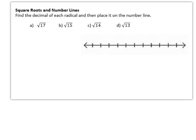Square roots and number lines. So you need the calculator for this one. The square root of 17 is approximately 4.123. Square root of B is approximately 3.87. Square root of C is approximately 3.74. And then the square root of choice D square root of negative 13 is approximately 3.6. And so when you plot them on the number line it's kind of up to you how you broke up that number line. But you can see the order that they would go.